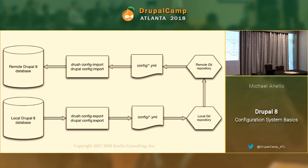The import command takes all your config and brings it into the database. This can get complex because enabling a module is configuration. When you enable a module, it has install hooks that can create tables, modify fields, and add records. So if a configuration enables a module during import, the import has to be smart enough to do all the things that module needs. This is a simple export but a much more complex import process. The end result is all of that configuration becomes your active configuration in the database.